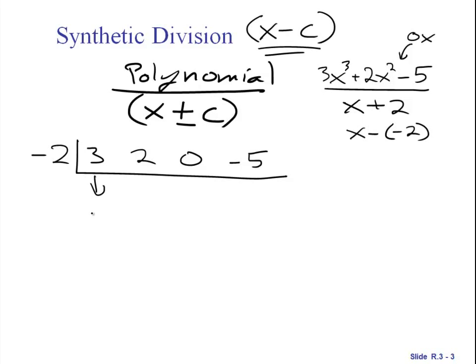The second thing to remember is you just bring down the first number and now it is just a matter of multiplying and adding and multiplying and adding. So negative 2 times 3 gives me negative 6 and then add. Negative 6 plus 2 is negative 4. Now negative 2 times negative 4 is positive 8. Add you get 8. Negative 2 times 8 gives me negative 16. Add those you get negative 21.